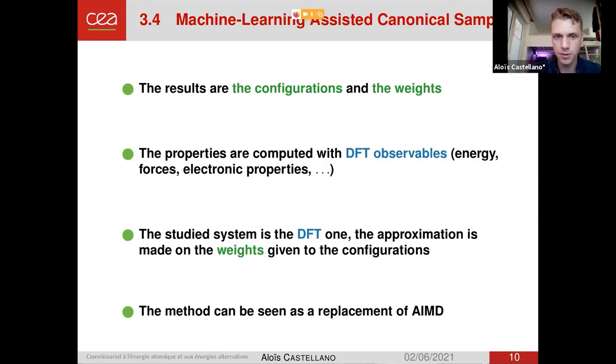I will stress on some points about how this method is compared to usual machine learning potential methods. Here, the results are not the machine learning potential, but the results are the configurations and the weights we have generated during the simulation. And in the end, the properties we compute, we compute with DFT observables. So all these energies and forces, we could use the machine learning potential, but we use here the DFT energy and forces. But we can also compute properties, as I said just before, from some properties that are not available with the machine learning potential. So in the end, the system we are studying is the DFT one. We are not studying an alternate machine learning system. We are studying the DFT system. The only thing is that we do an approximation on the weights and the configuration we are using. It's really a sampling method. This can be seen as a replacement of ab initio molecular dynamics.